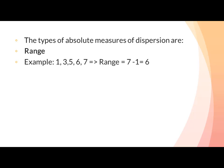Variance: to find variance, deduct the mean from each data value in the set, then square each result, add all the squares, and finally divide by the total number of values in the data set. The formula for variance is: σ² = Σ(x − μ)² / n.